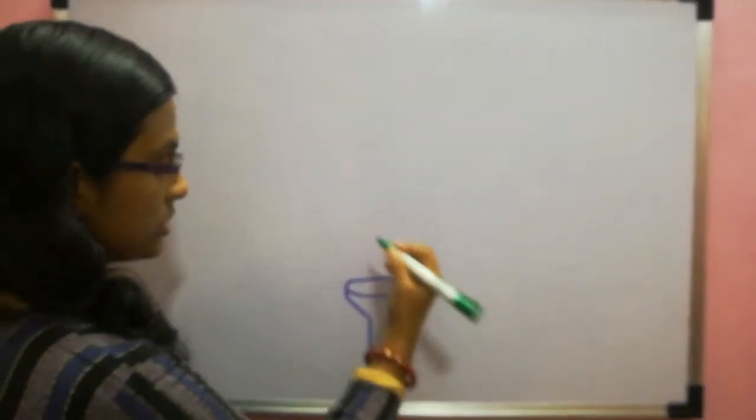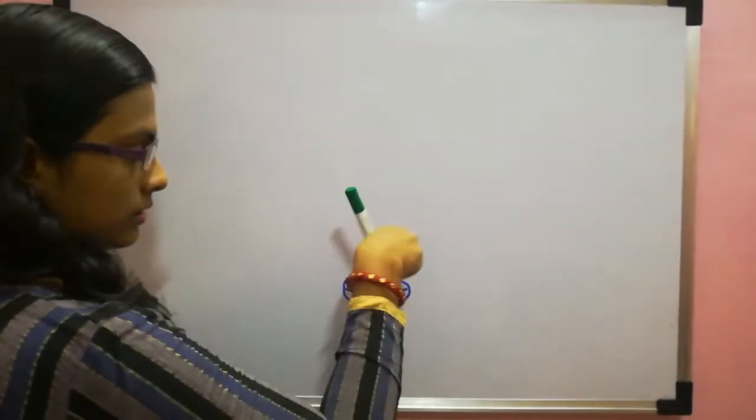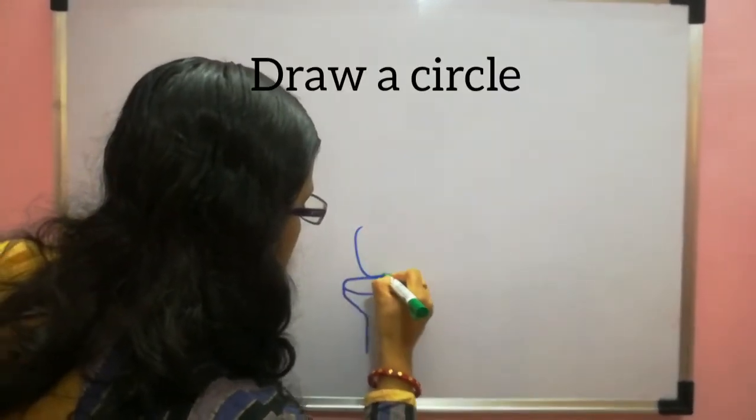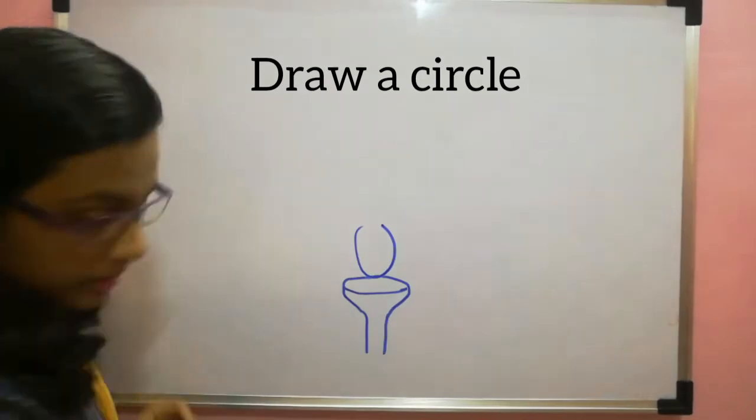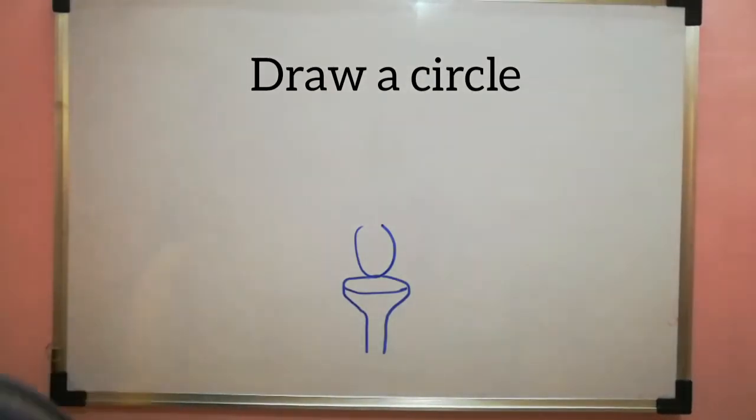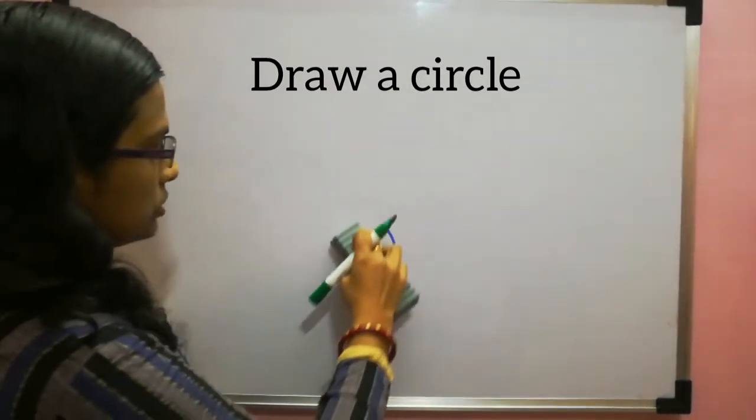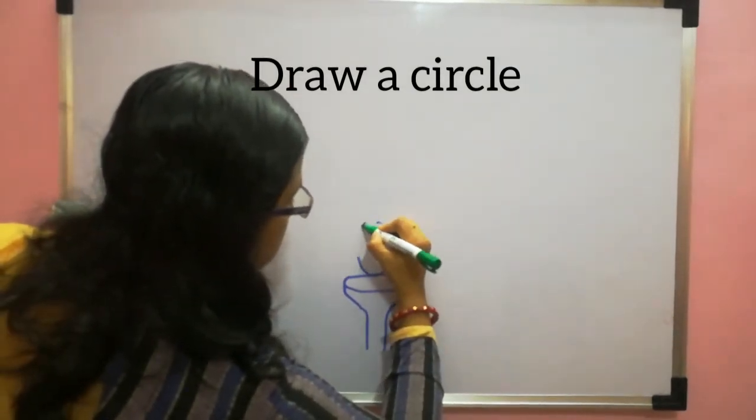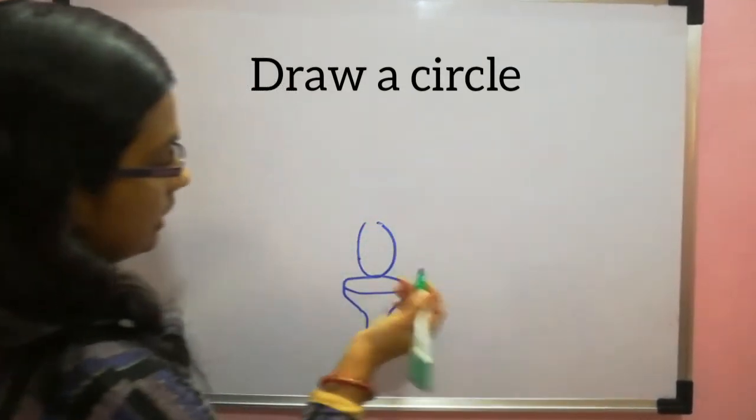Then over this base you have to make a circle. Now make a big circle which is the ovary part. You can make a circle or a dish shaped structure also. Don't tilt the circle. Leave some space.